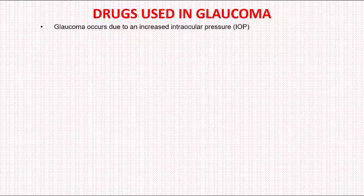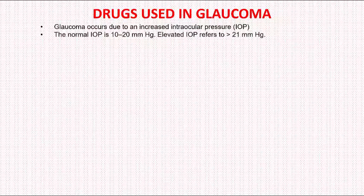Today we will talk about the drugs used in the management of glaucoma. Before moving to the drugs, we will very briefly look at what glaucoma is and the aqueous humor dynamics. Glaucoma occurs due to an increased intraocular pressure. The normal intraocular pressure is 10 to 20 millimeter mercury, and increased intraocular pressure refers to a pressure of more than 21 millimeter mercury.